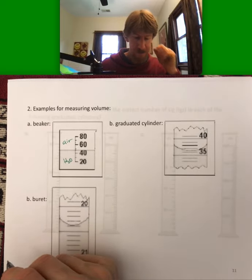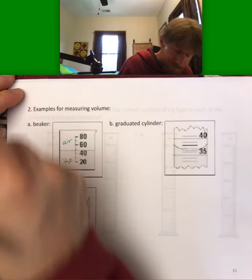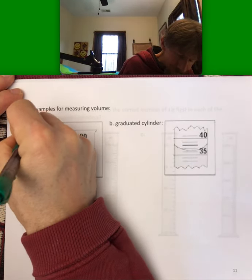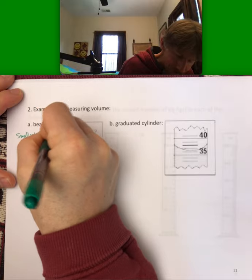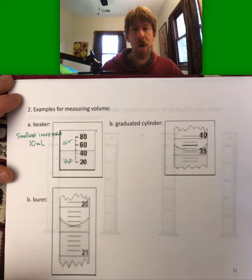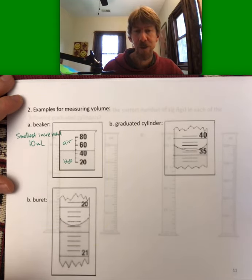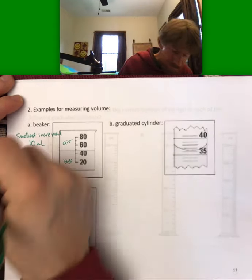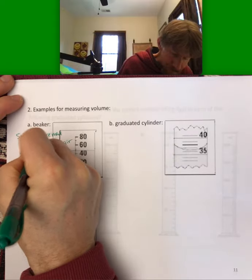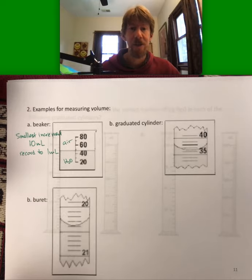So the smallest increment is actually 10 milliliters. You always read to one-tenth of that, so you record to one milliliter. Meaning the nearest one milliliter.